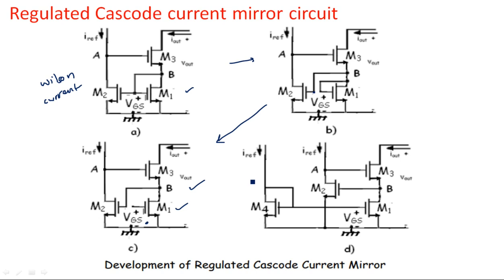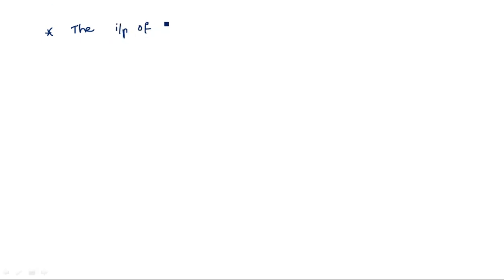While Vmin and the matching of VDS for good mirroring is the same as in the improved Wilson current mirror circuit, in this circuit the input of M1 is taken separately.